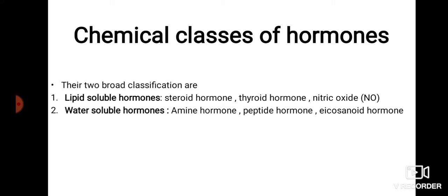Eicosanoid hormones are derived from arachidonic acid, which is a 20-carbon fatty acid. This hormone is named eicosanoid because 'eico' means having 20 carbons.